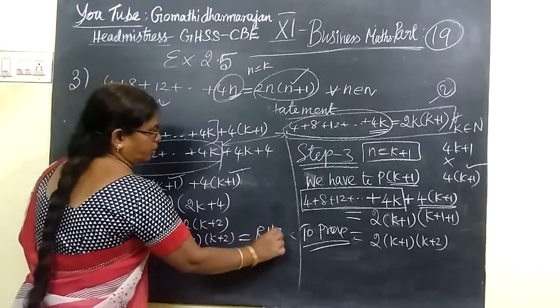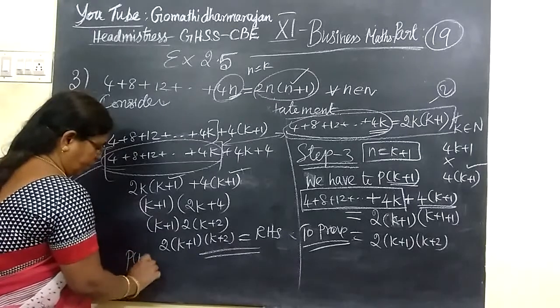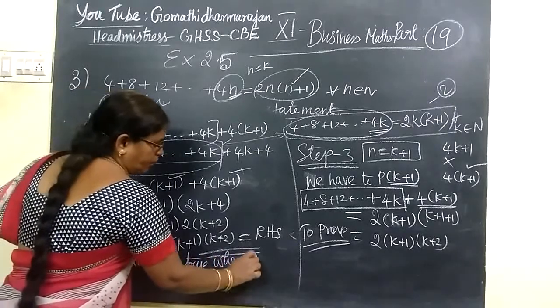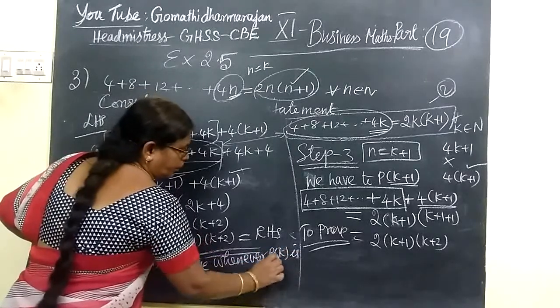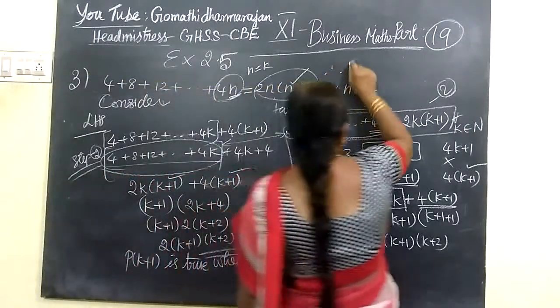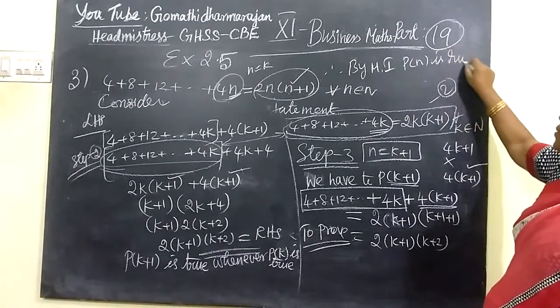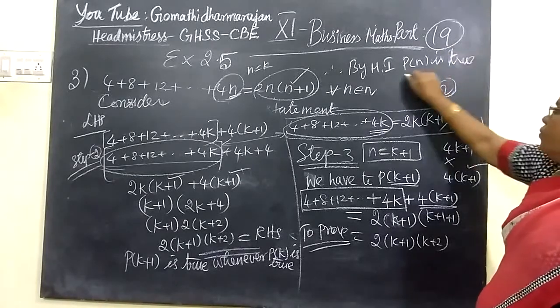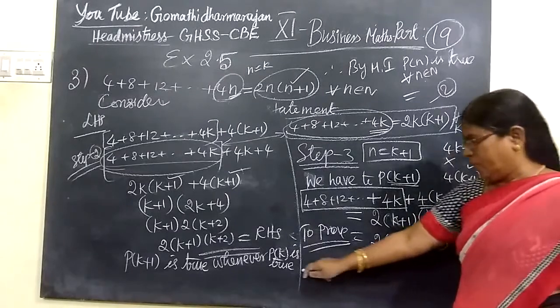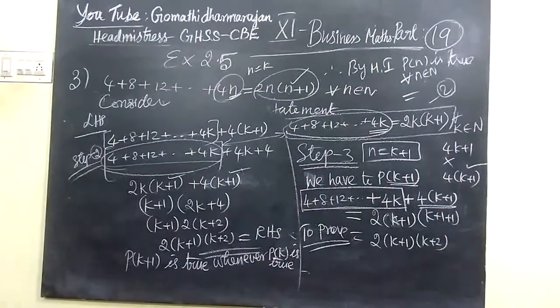This is equal to RHS. So this only you want to prove. So you can write, therefore P of K plus 1 is true. Continue to the method of what you write. Whenever P of K is true, P of K plus 1 is also true for all K belongs to N. Whenever P of K is true, therefore by mathematical induction, therefore by mathematical induction, P of N is true for all N belongs to N. This is the proof. Thank you.